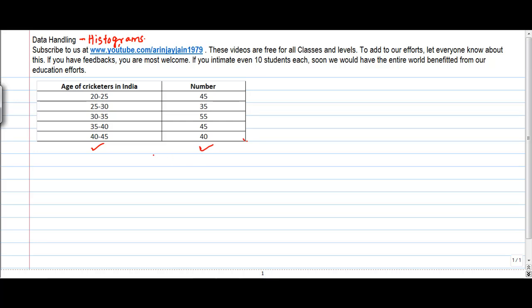how many cricketers are playing within that age group and you are told to prepare a graph for them. So when you do that, let's say you take intervals and let's say instead of 0 the starting point is 20.